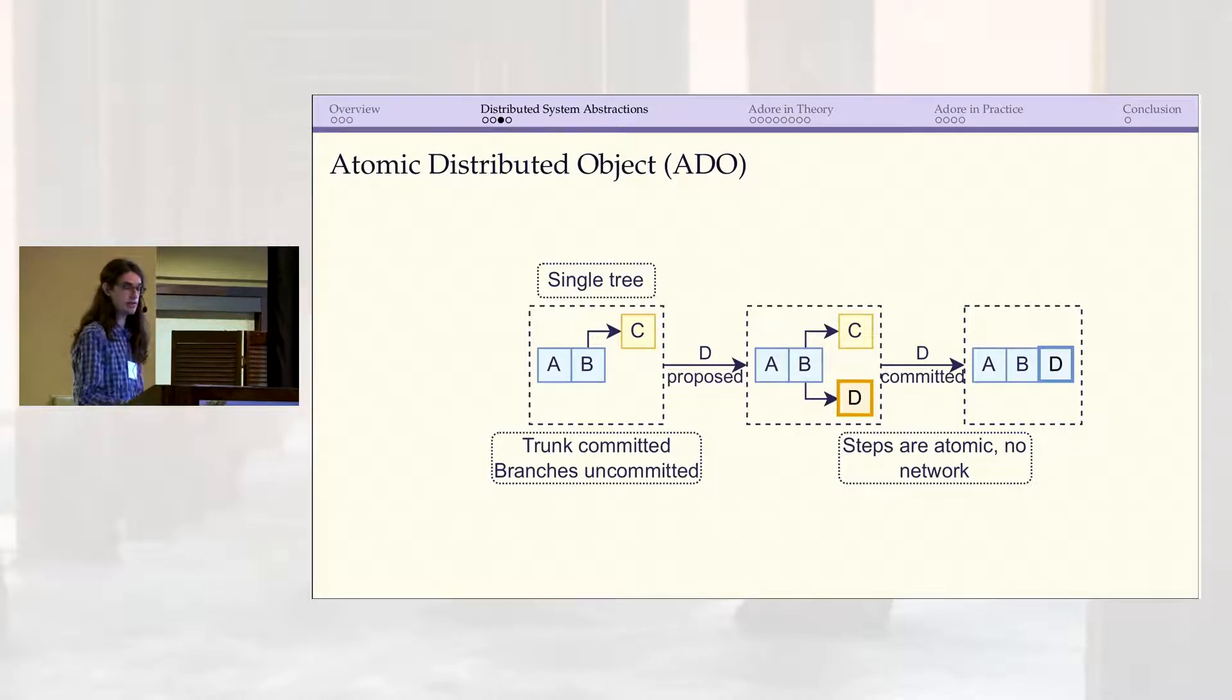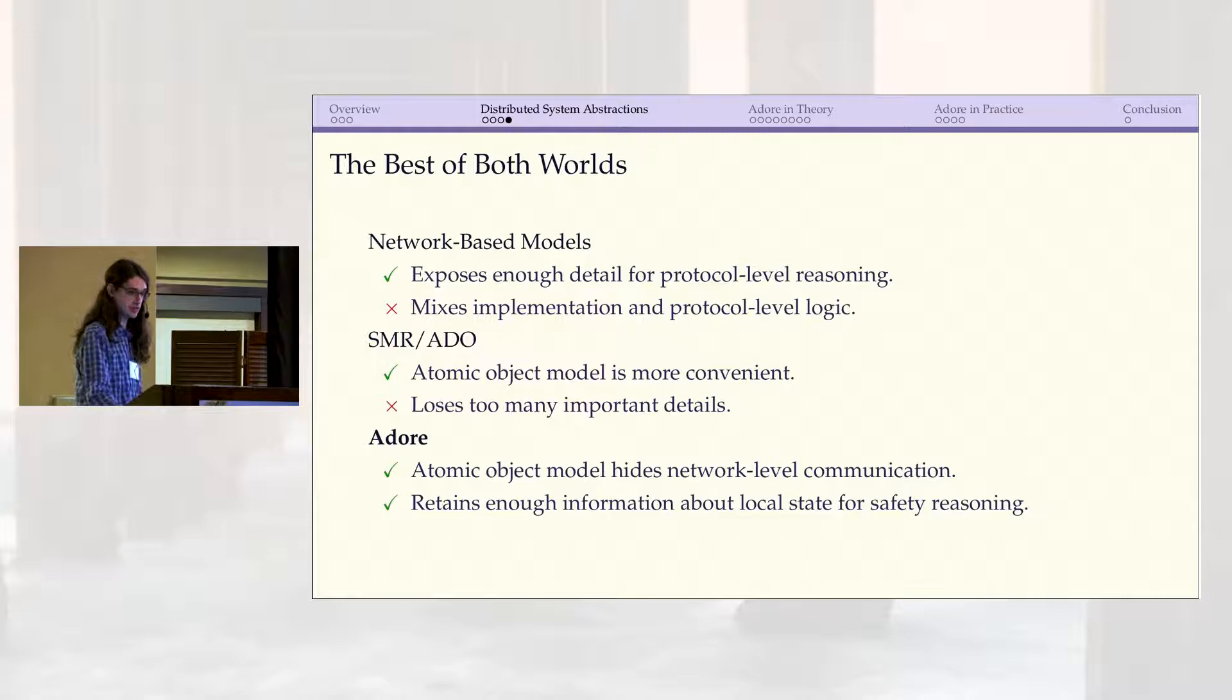If we slightly open this black box, we can get the atomic distributed object, or ADO model, which we presented at last year's OOPSLA. The main difference here is we're still modeling the system as a single atomic object, but in addition to the committed states, we also have these branches. We call this data structure a cache tree, and these branches represent the temporarily uncommitted states. So like with the network model, we can observe this point where C and D are uncommitted, and then D is eventually committed. But like SMR, the internal network communication steps are all hidden, and it's just an atomic step. This is still a bit too abstract for reconfiguration, but this idea of modeling these inconsistent states with a tree will turn out to be very useful. So to recap, reconfiguration is a very important but difficult problem, so we want an abstraction that makes it as easy as possible to reason about. This is technically possible to do with network-based models, but it's fairly complex because of how they mix concerns from different abstraction levels. SMR and ADO are too abstract to handle it, but they propose an interesting idea with this atomic object model.